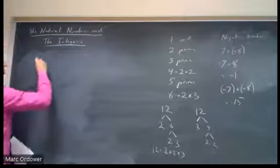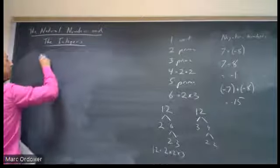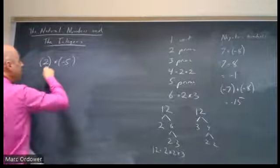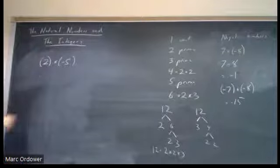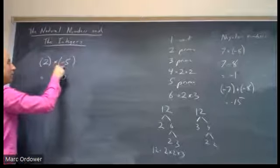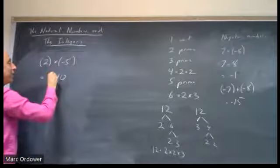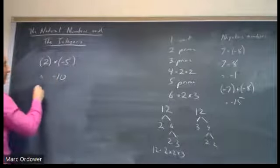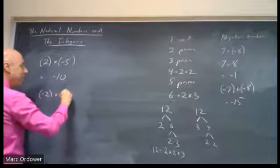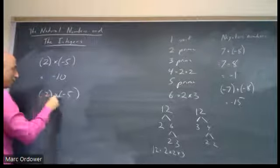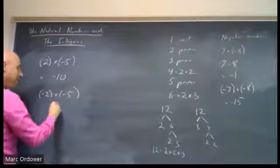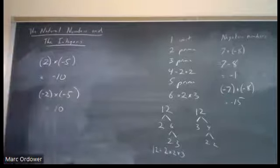If I take a number two and I multiply it by negative five, two times five, we know is 10. But that minus sign, when you multiply a positive by a negative, you get a negative. But if I take negative two and multiply it by negative five, then you probably remember that a minus times a minus, a negative times a negative is a positive. Two times five is 10, and the two minus signs cancel out.